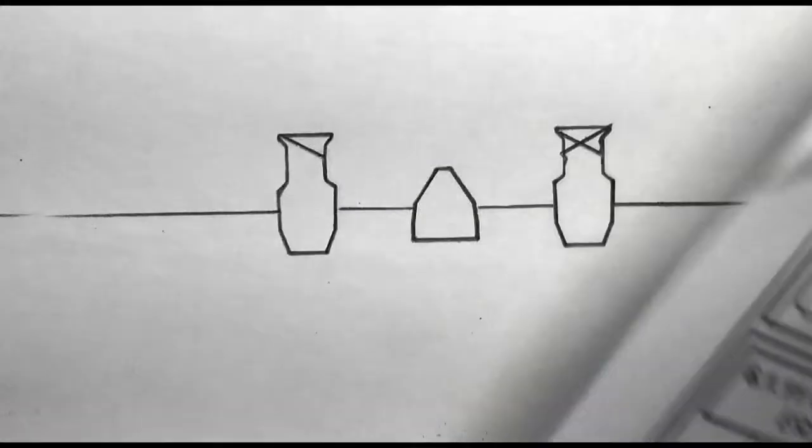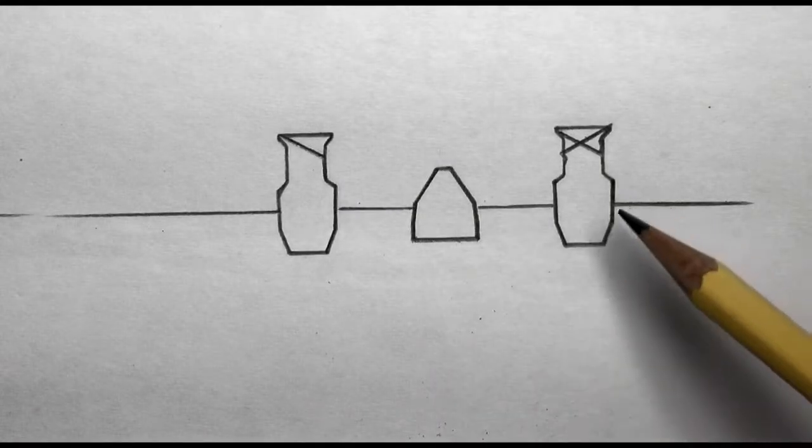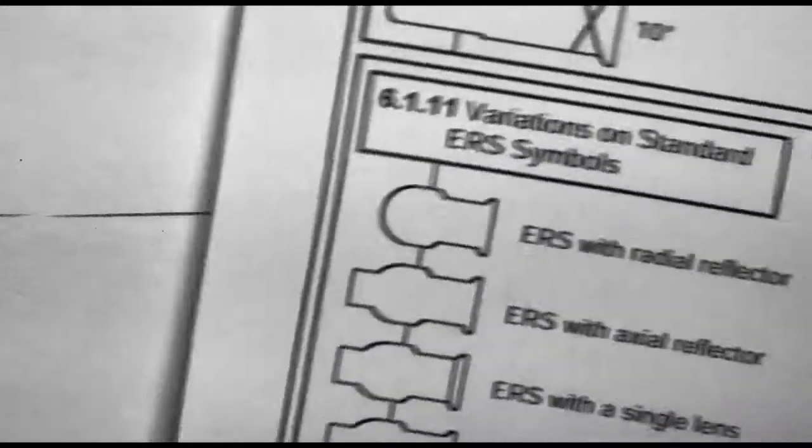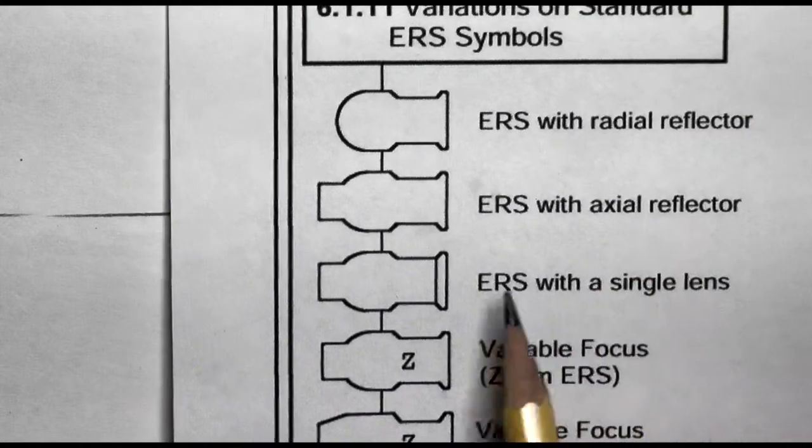On occasion, there are going to be some other objects that you need to place in our light. For example, gobo rotators or maybe it's a zoom unit and such, and this has different symbols on here with a guide on how to do that.